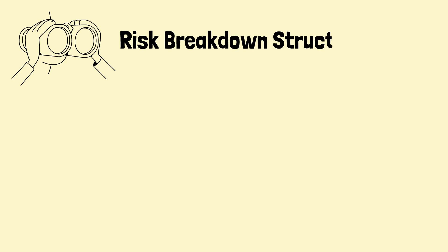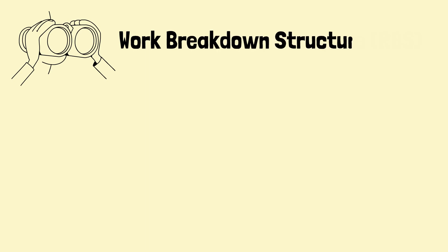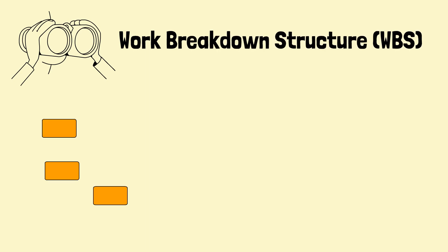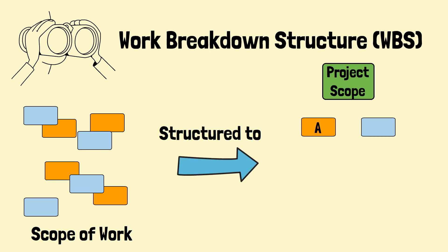Before we delve into the risk breakdown structure, let's briefly touch upon a well-known concept in project control: the work breakdown structure, aka WBS. The WBS provides a means of structuring the work to be done in order to achieve project objectives.